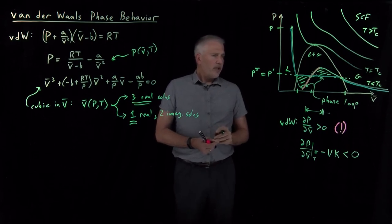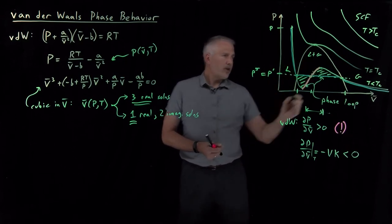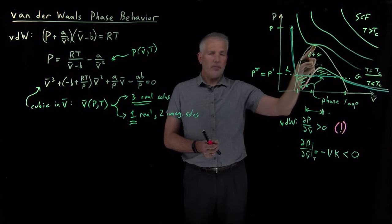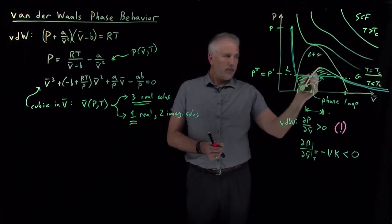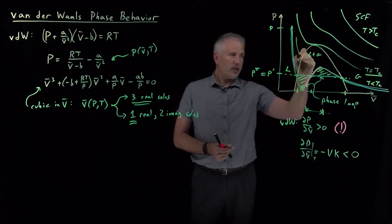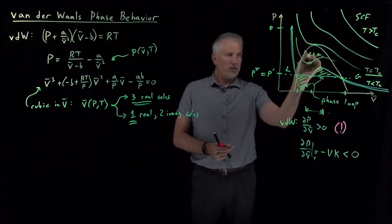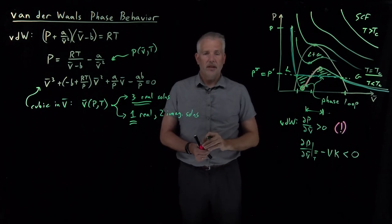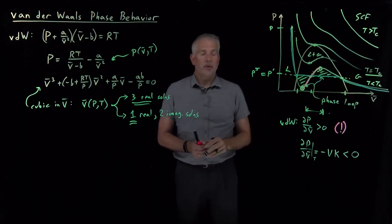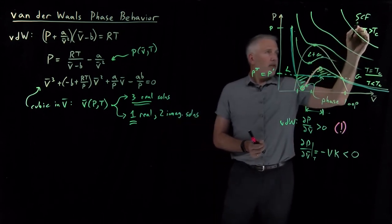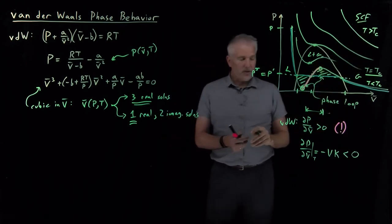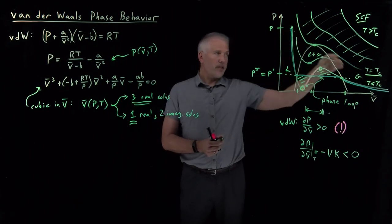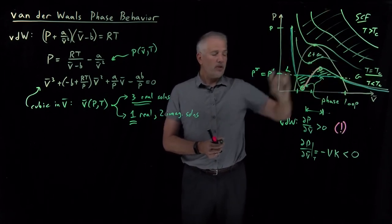The critical temperature is the temperature at which the isotherm becomes horizontal for exactly one moment rather than exhibiting a minimum and maximum. As temperature decreases from above, those minima and maxima converge until they meet at a single point — the critical point — at the critical temperature. The supercritical fluid region consists of any fluid with a temperature greater than the critical temperature, so any isotherm above the critical temperature describes a supercritical fluid.